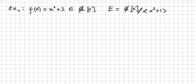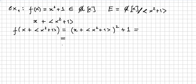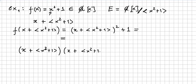But as we have seen before, x plus the ideal is going to be a zero in this field. Let us check that. We compute f of x plus the ideal, which is x plus the ideal squared plus 1. This equals x plus the ideal times x plus the ideal, and since this is an integral domain, it gives us x squared plus the cross terms.